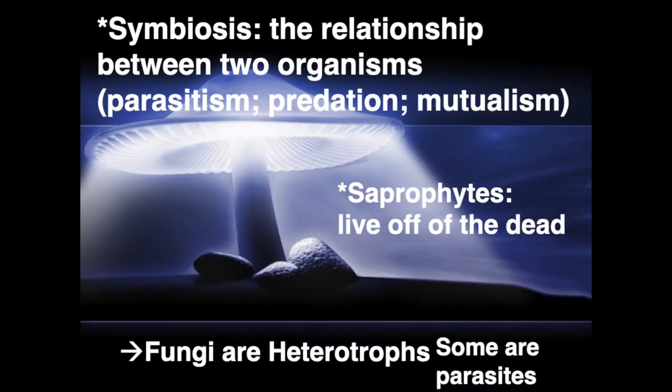The word symbiosis means a relationship between two organisms — this can be positive or negative. Many fungi have a form of symbiosis called parasitism, which is a positive-negative relationship where the fungi may feed off of the host. A great example of this is athlete's foot or ringworm. There are also some examples of mutualism with fungi, where fungi may grow on the roots of plants helping the plant absorb more water, so both the fungi and the plant benefit.